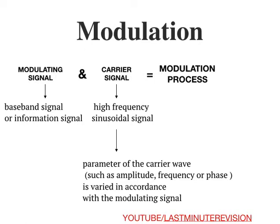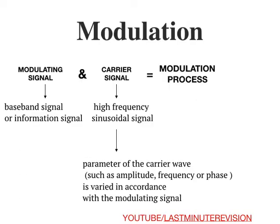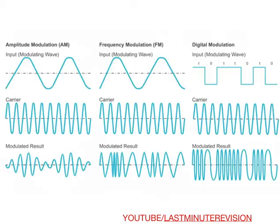To recap: modulation is the process of varying one or more properties of a periodic waveform called the carrier signal with a modulating signal that typically contains information to be transmitted. Now we'll look at the waveforms. These are some of the types of modulation — the first is amplitude modulation.